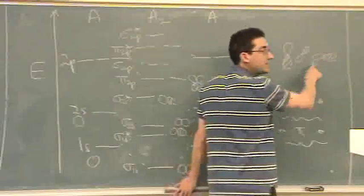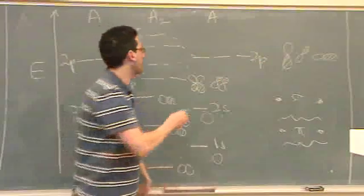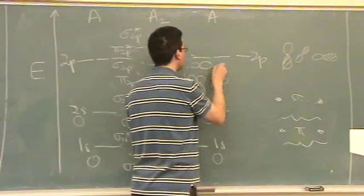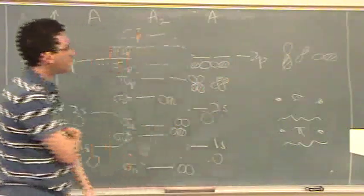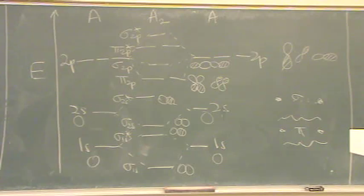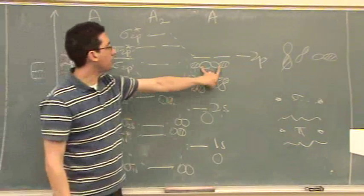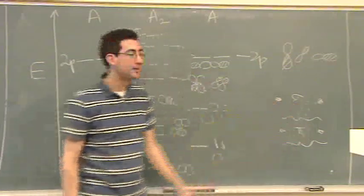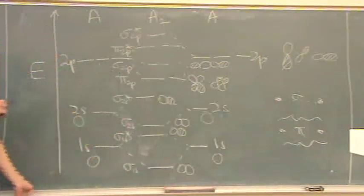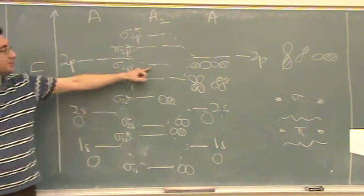So, if we bring these together, in the correct phase, we'll get something to look like this. Is that a pi or a sigma bond? Yeah. But the bond is between the middle. So, it's sigma. That's why I called it sigma 2p. And there's only one. That's why there's only one line.